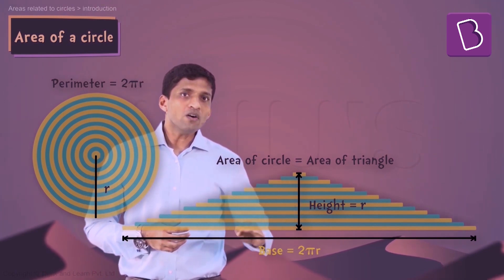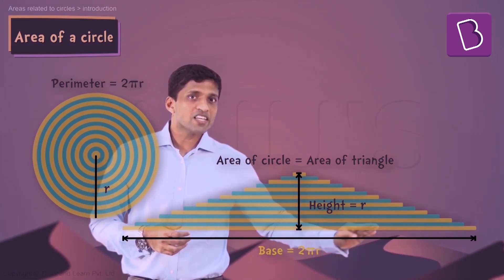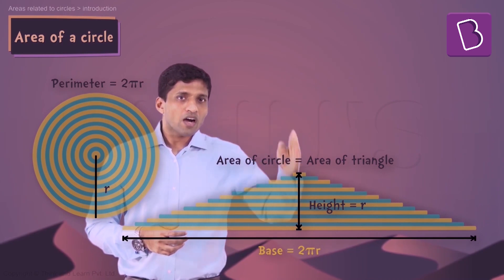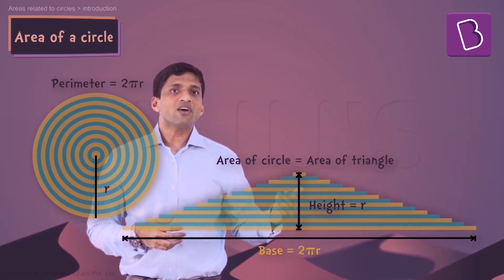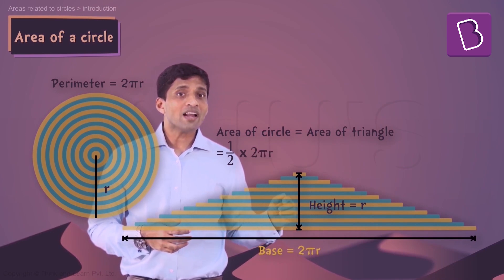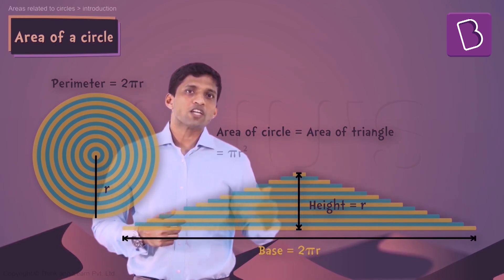What is the area of the triangle here? The base here is 2πr. The height here is r. So we can directly write down ½ × 2πr × r which is nothing but πr².